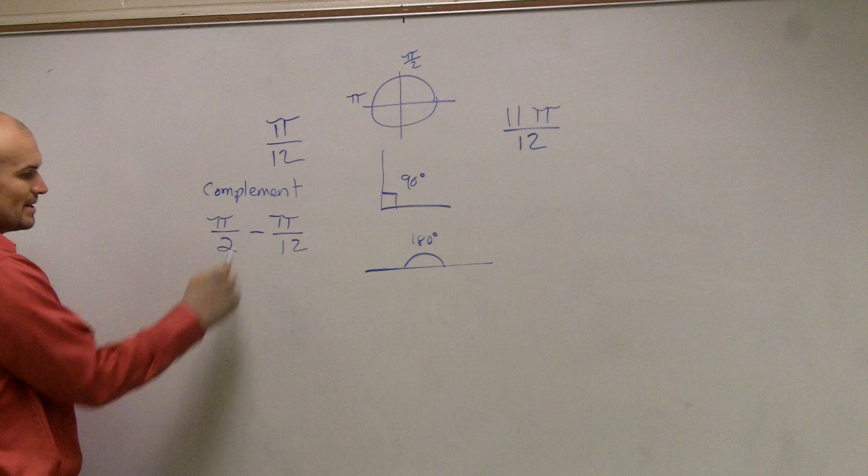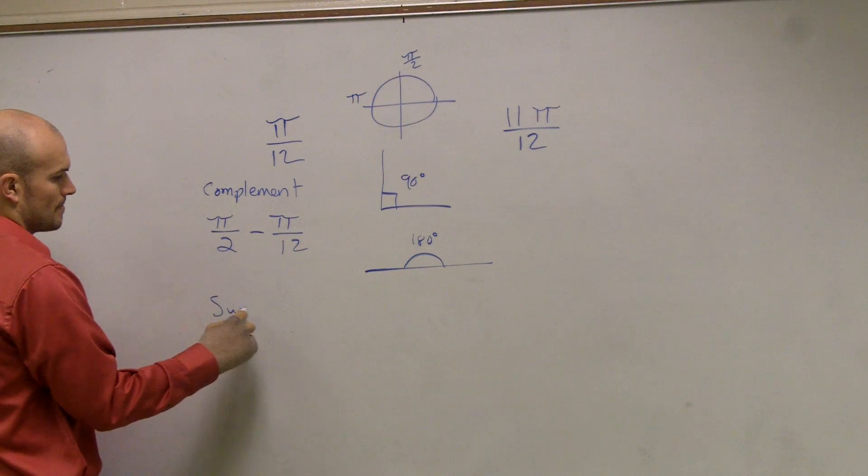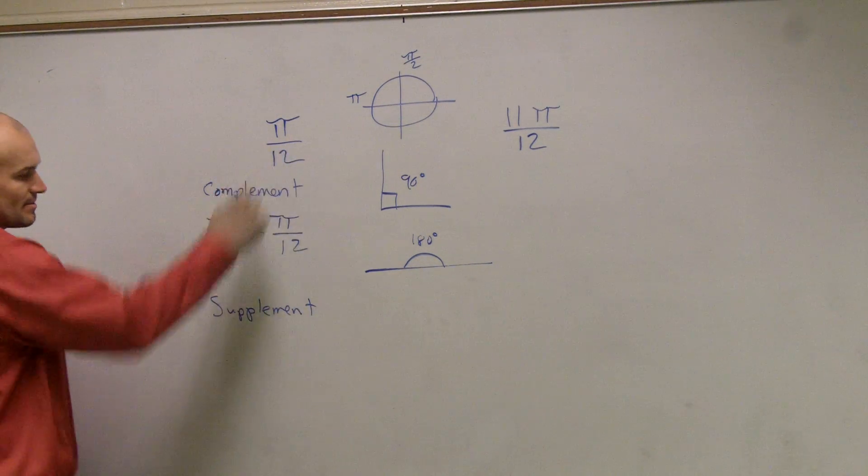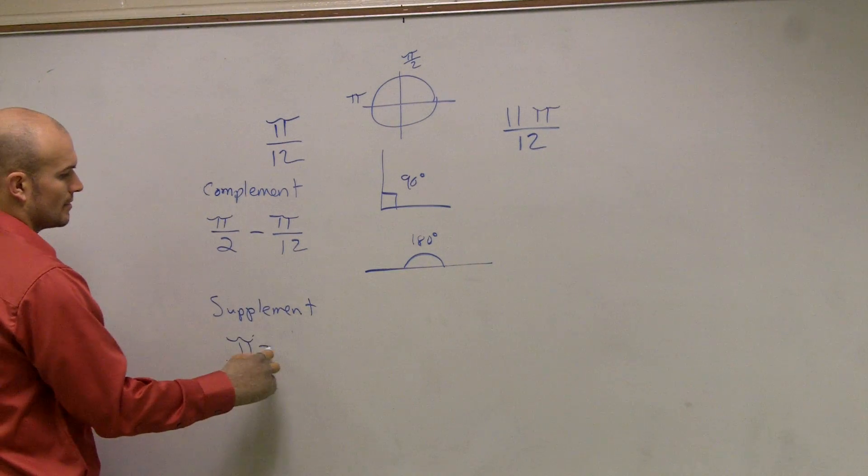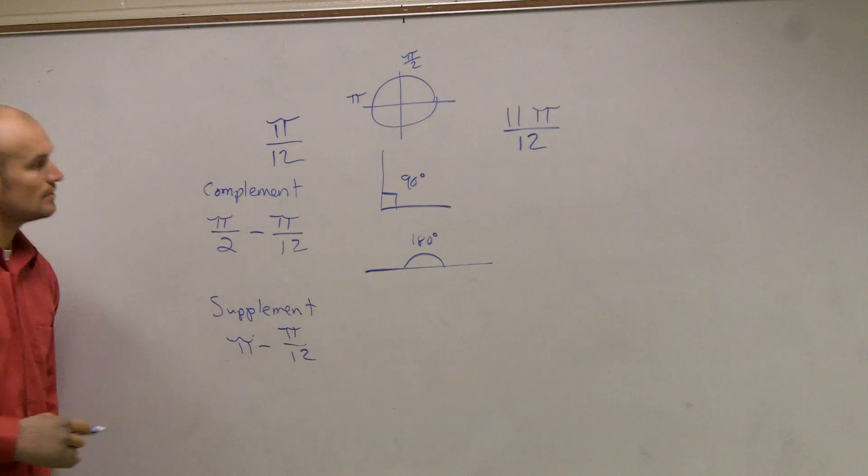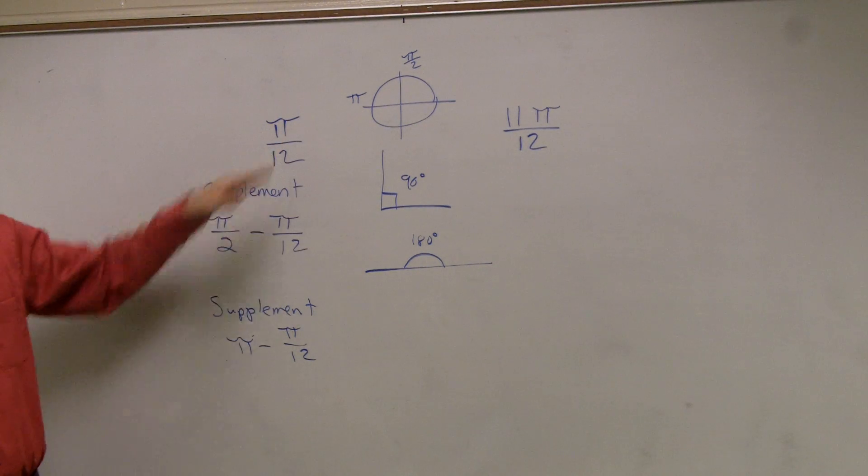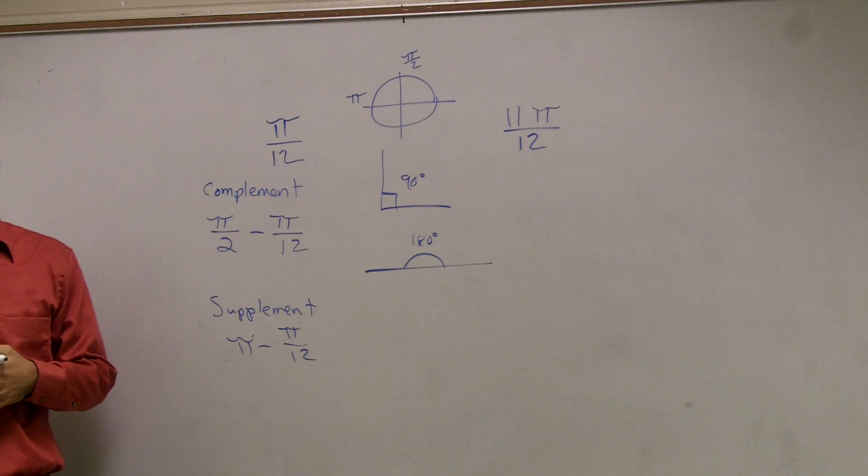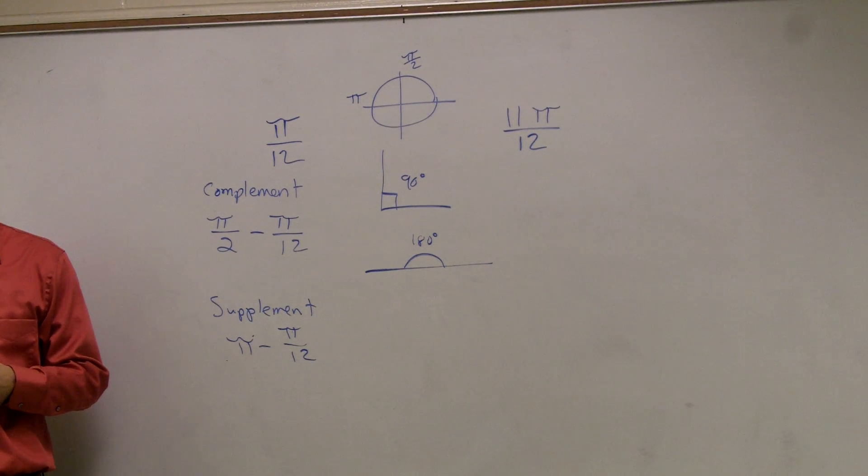And if I want to find the supplement, all I'm going to do is I'm going to take π and subtract π over 12. Well, I'm just doing this problem right now. Does everybody understand why I'm subtracting? You guys understand why I subtract?